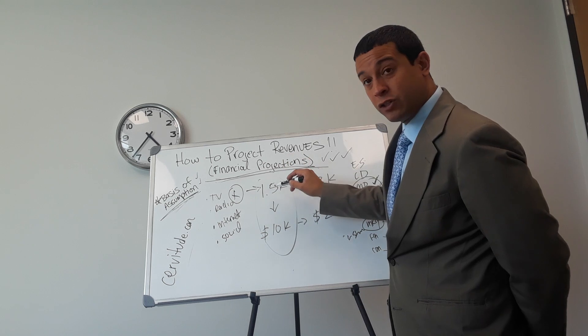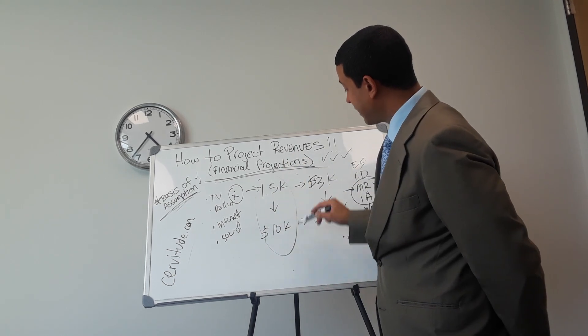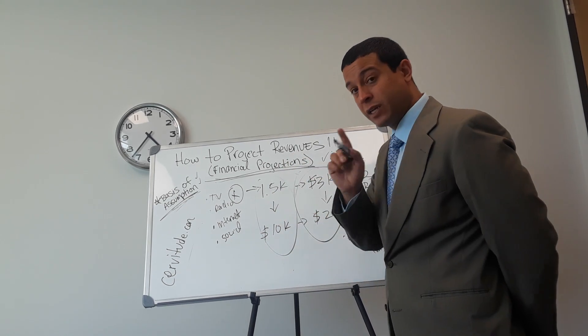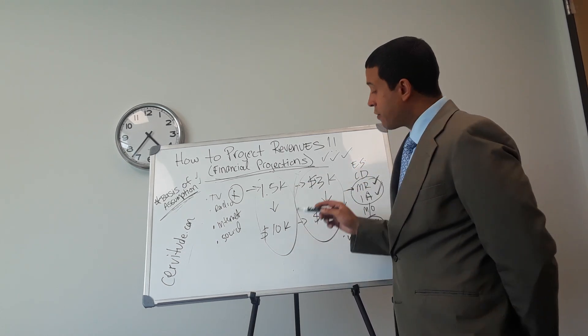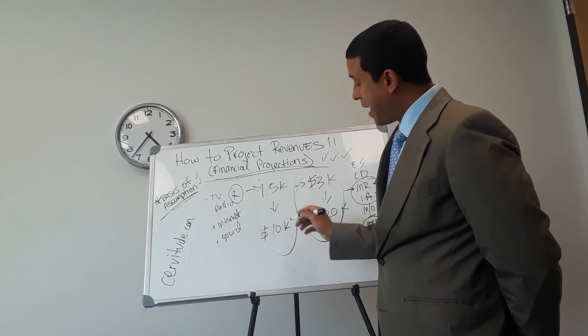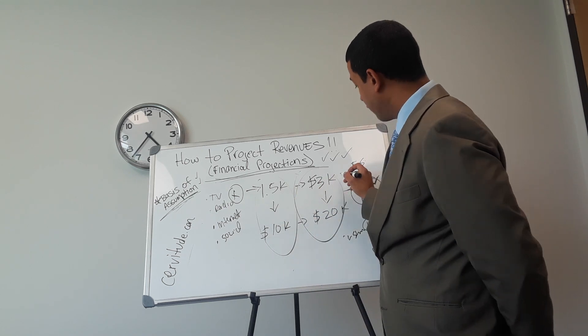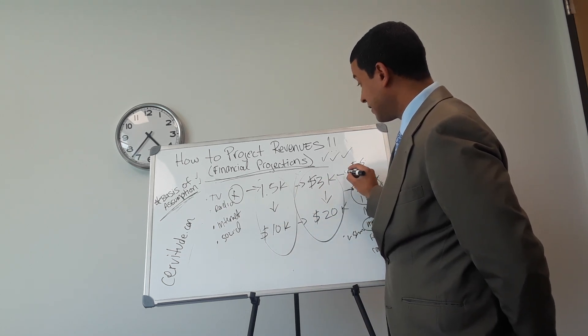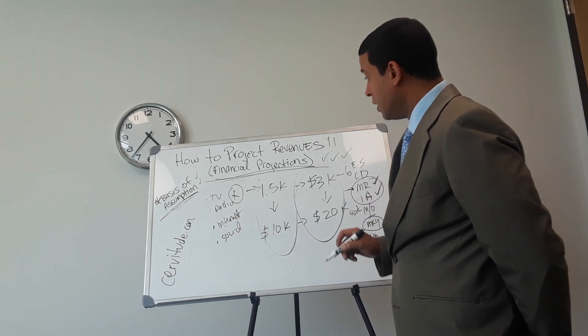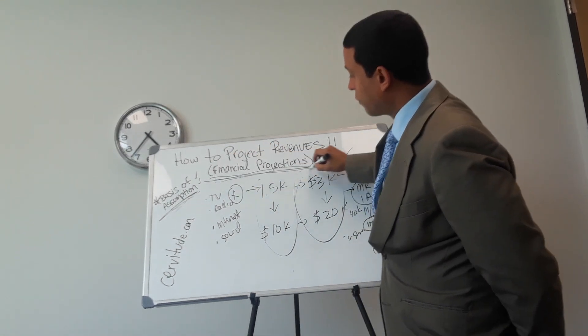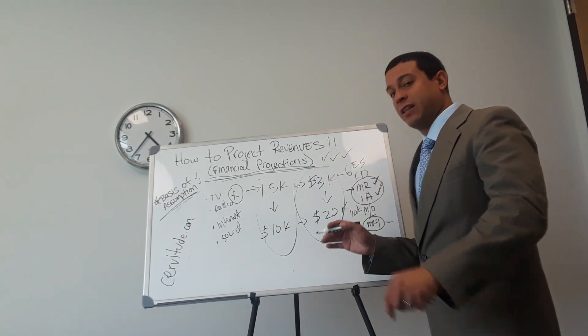Once you have this number, that you know when you spend $1,500 you get $10,000, and then you try it again - that's the key, you got to test it again - and you spend $3,000, you get $20,000. Now you have a model. You have a mathematical formula. You know that if you spend, and you're going to have to test this again, but if you spend $6,000, you're going to make $40,000. That's how you put together your financial projections when you don't have anything.